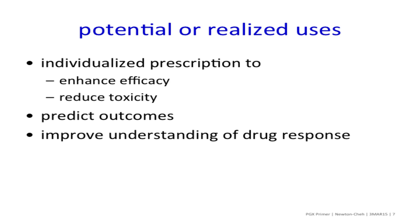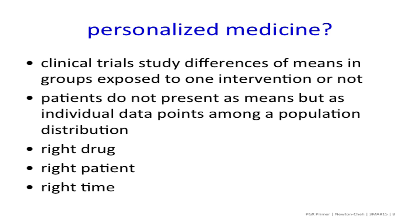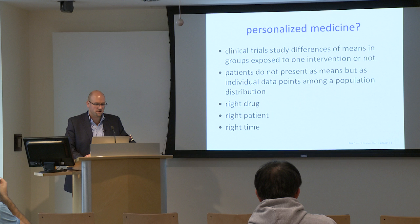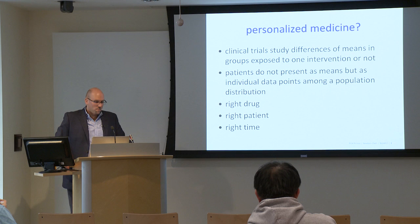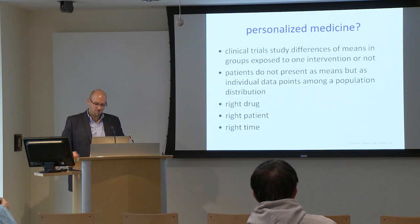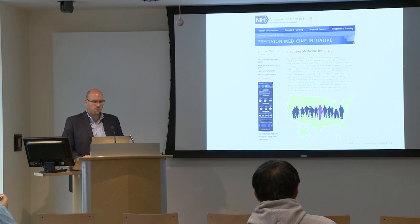Personalized medicine entails the attempt to go beyond clinical trials, which typically study differences of means in groups exposed to one intervention or not. Patients do not experience mean event rates — they experience individual outcomes. It's a zero-one proposition: they will or will not have a heart attack, and that leads to efforts to try to personalize the approach. Personalized medicine has been invoked to allow us to identify the right drug in the right patient at the right time, and there's an ongoing precision medicine initiative focused on such an approach.